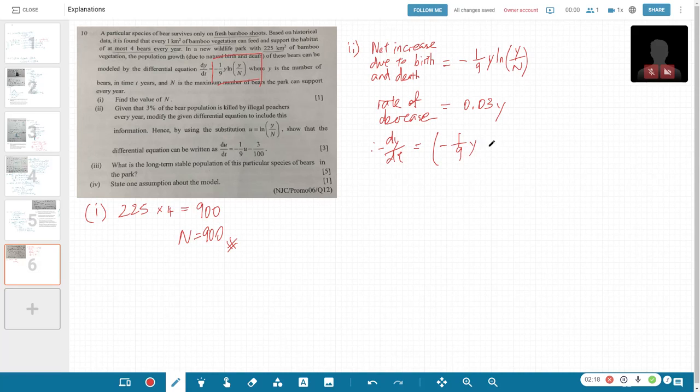Therefore, dy/dt is rate of increase minus rate of decrease: -1/9 Y ln(Y/N) minus the rate of decrease 0.03Y. This is what we have in terms of Y.